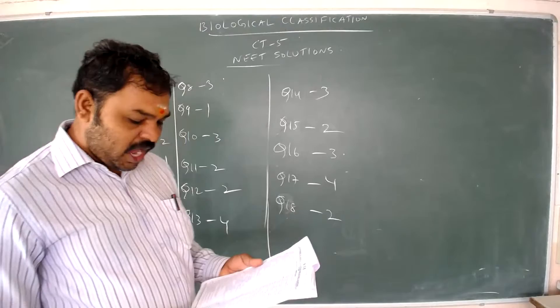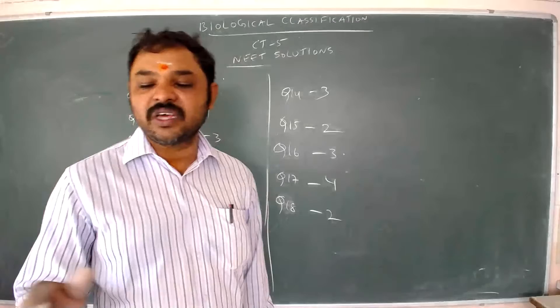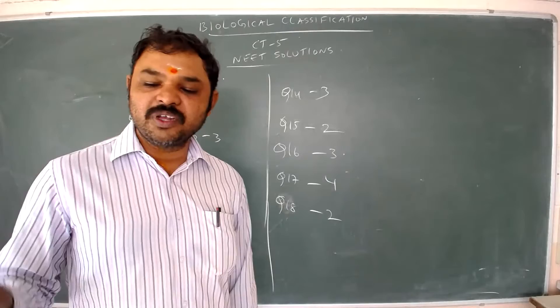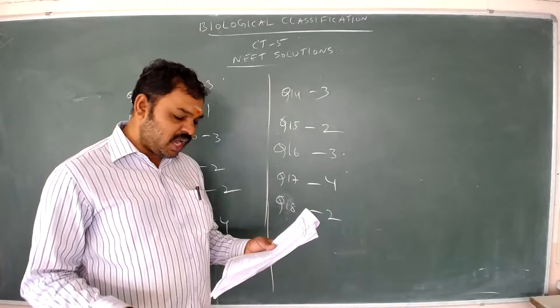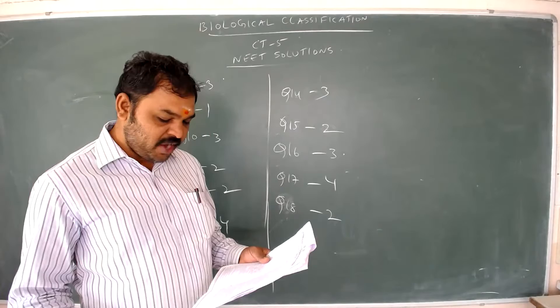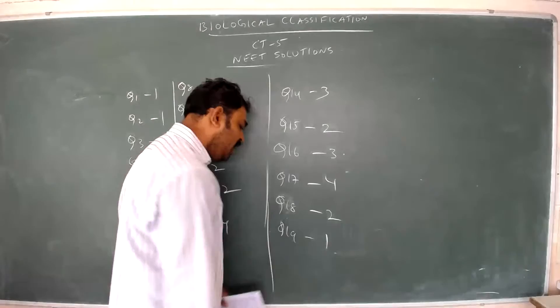Question number nineteen: auxospores and akinetes are formed respectively in diatoms and cyanobacteria. Several diatoms produce auxospores, while cyanobacteria produce akinetes. The answer to question nineteen is option 1.